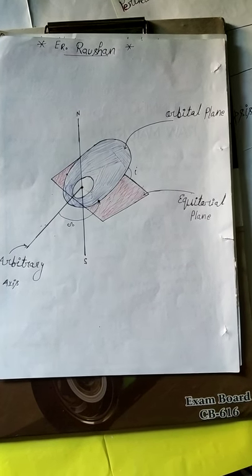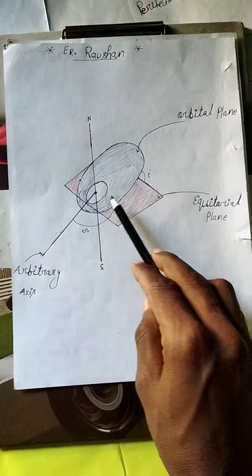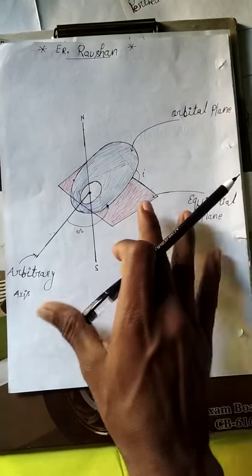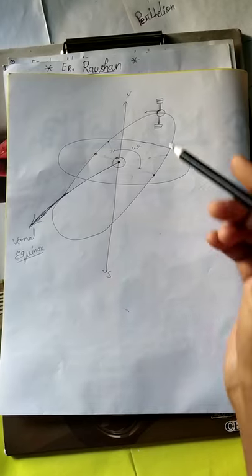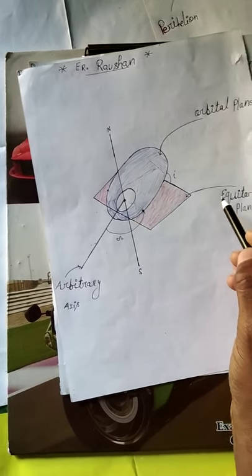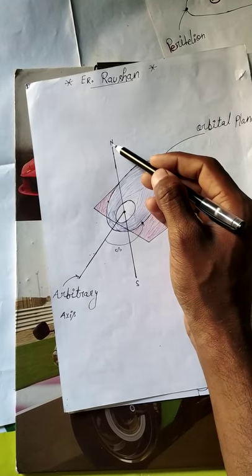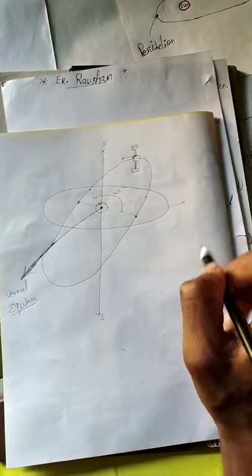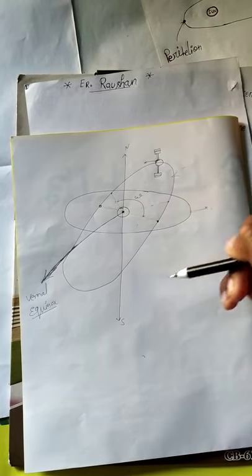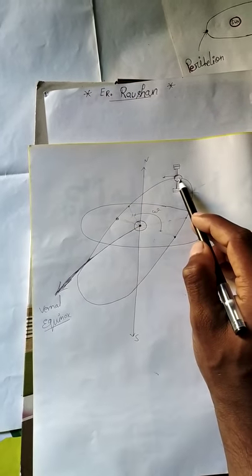Good morning friends. Today I am talking about Keplerian elements. Here is a 3D diagram and we try to understand these very easily. We will also make a 2D diagram. This is the equatorial plane and this is the orbital plane. Here is the satellite orbit.